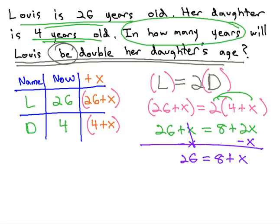Finally, we can get the x alone by subtracting 8 from both sides. We find out x is equal to 18.